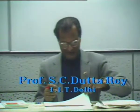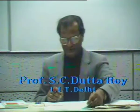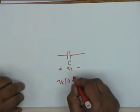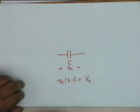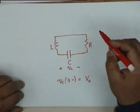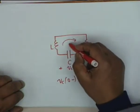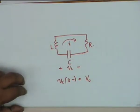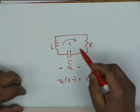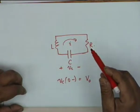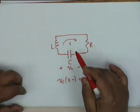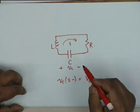In the second order circuit we had considered: we have a capacitance charged to a voltage V0, and then at T equal to 0 it is connected across an inductance L and resistance R. The current that flows in the circuit is I. We were considering this particular LCR circuit.